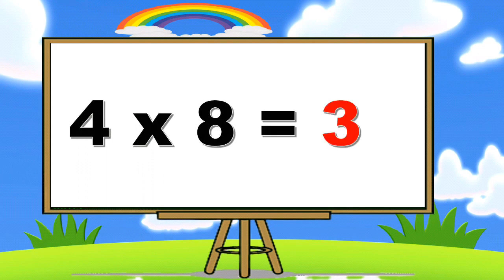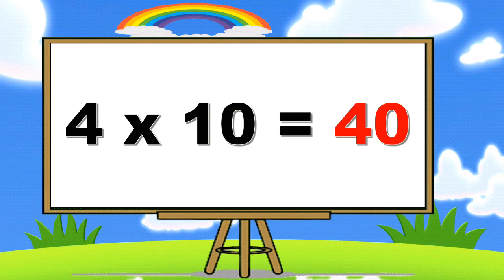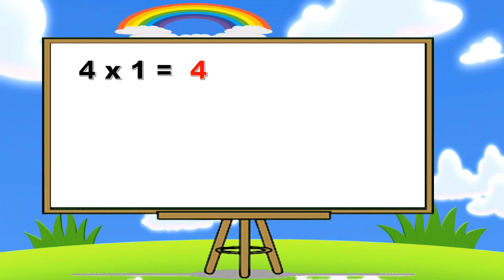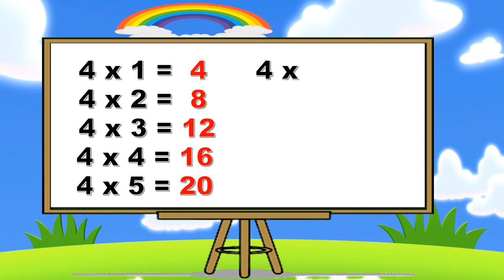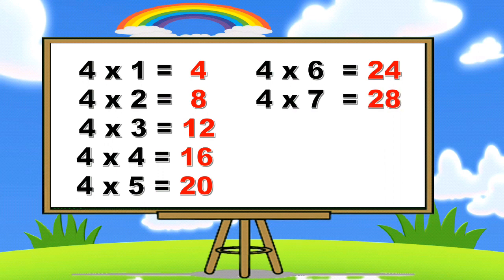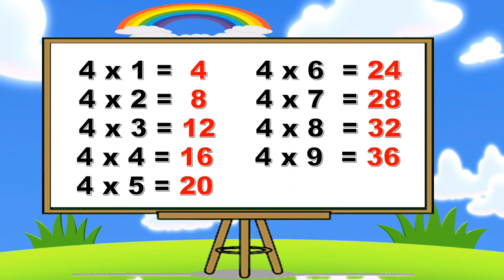Four eights are thirty-two, four nines are thirty-six, four tens are forty. Four ones are four, four twos are eight, four threes are twelve, four fours are sixteen, four fives are twenty, four sixes are twenty-four, four sevens are twenty-eight, four eights are thirty-two, four nines are thirty-six, four tens are forty.